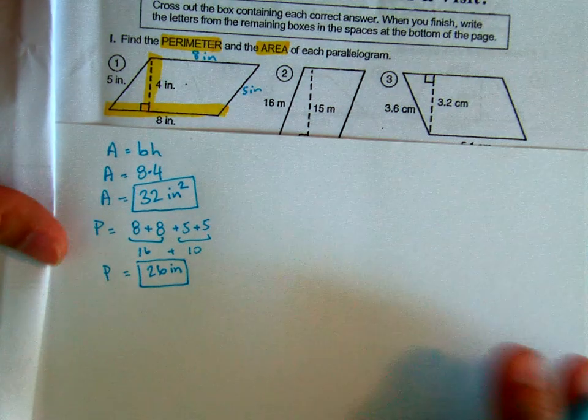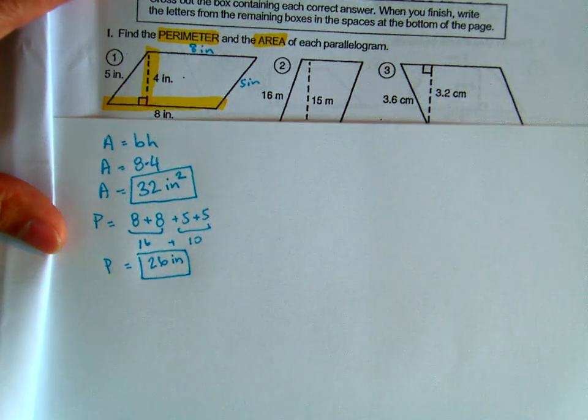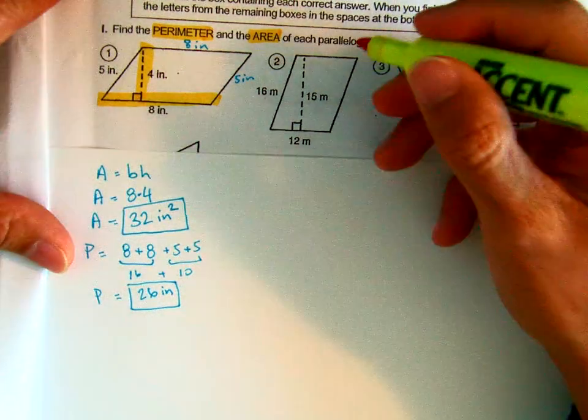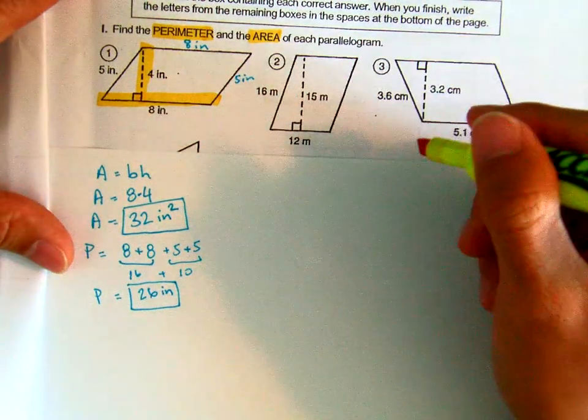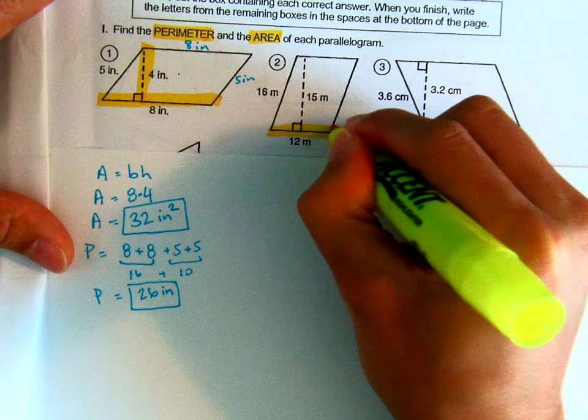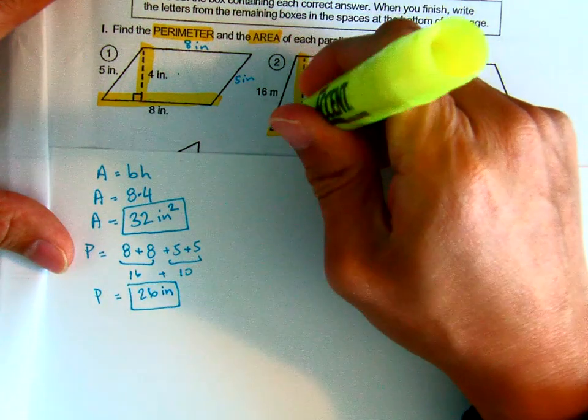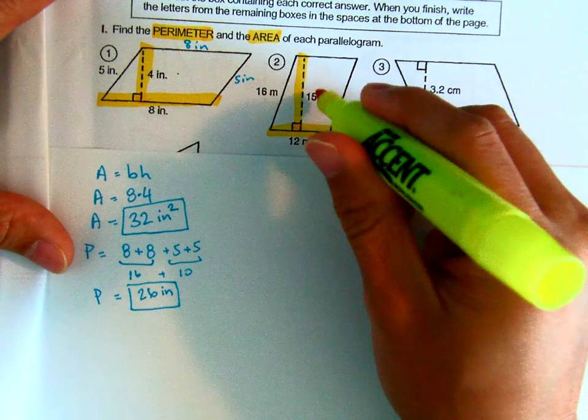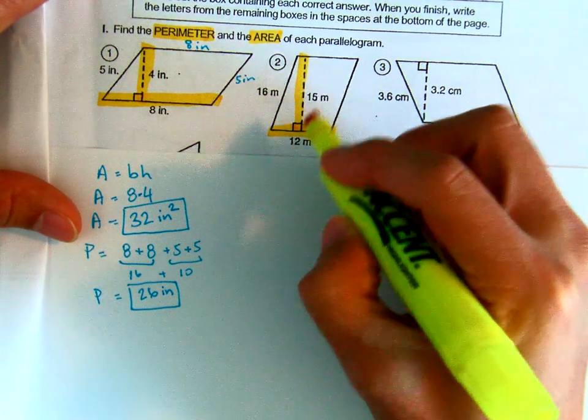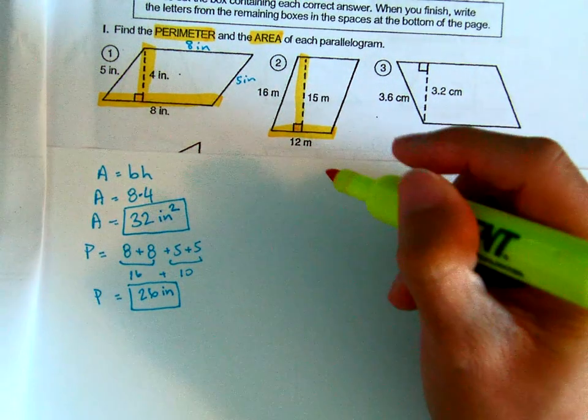So that's how you do number 1. Number 2, we're not going to work through the whole thing. But to find our base and height, we find the T, the little box. So our base is 12 and our height is 15. What happens if you multiply 15 with 12 instead of 12 and 15? Well you're going to get the same answer, so it doesn't matter.